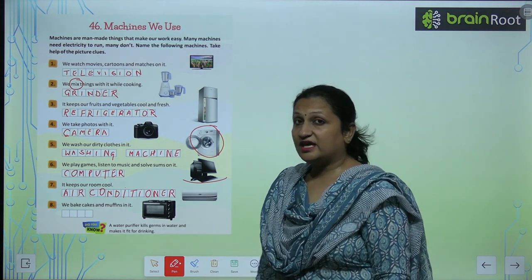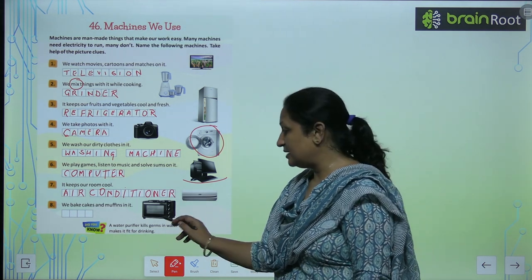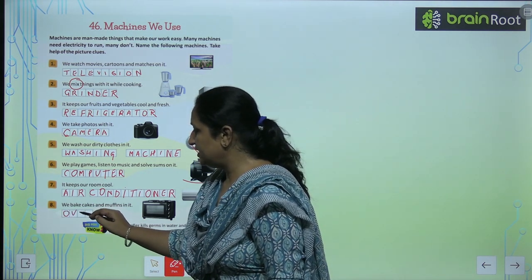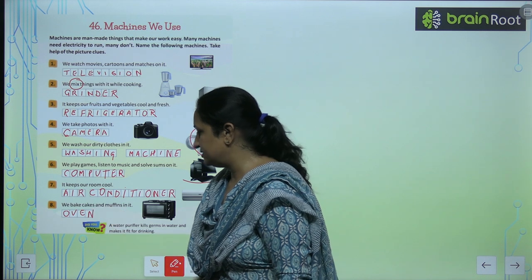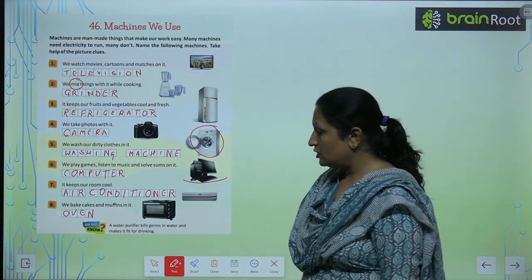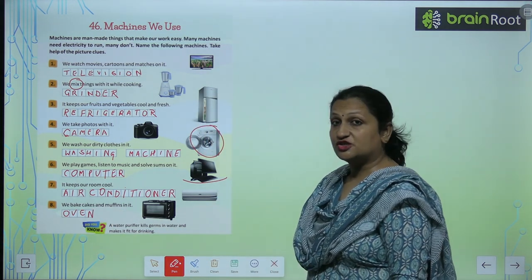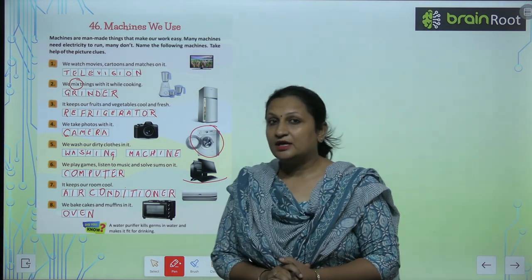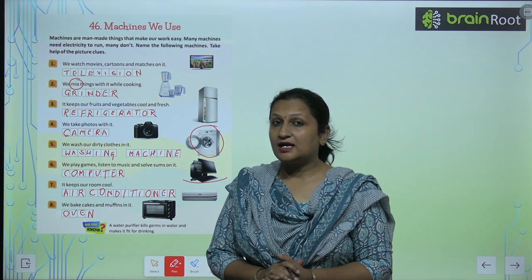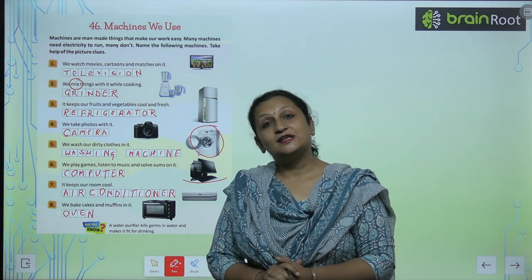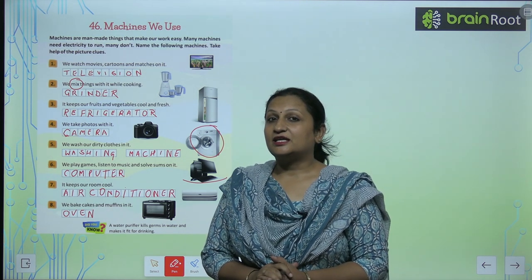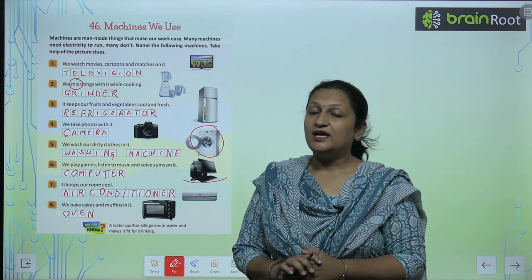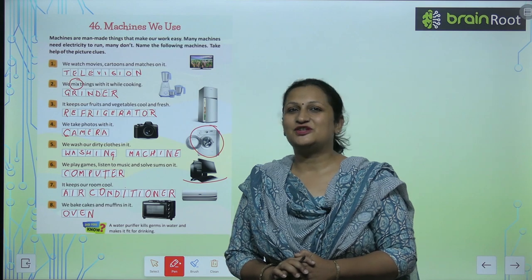And here we bake cakes and muffins and eggs — this is our oven, O-V-E-N. Children, do you know? A water purifier kills germs in water and makes it fit for drinking. The RO machine in your home filters the water so that all germs are removed and the water becomes fit for drinking.